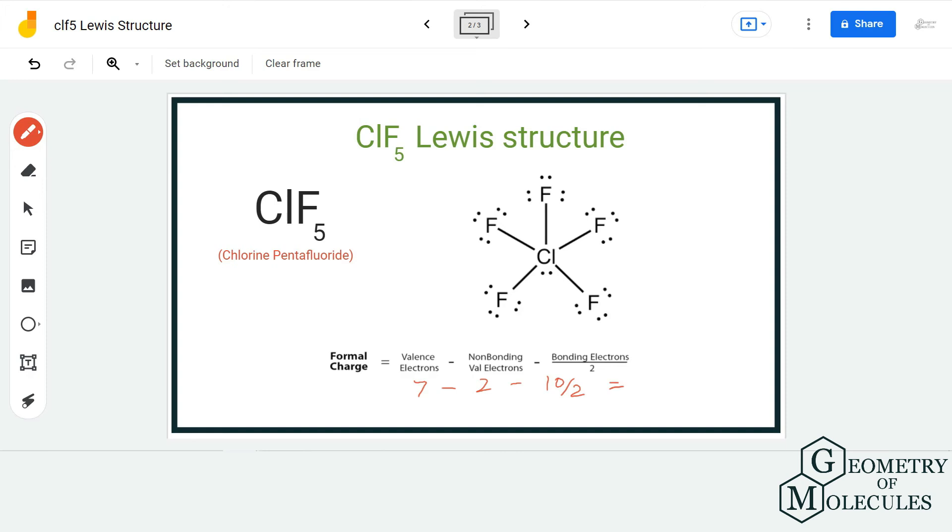For fluorine it has seven valence electrons out of which six are non-bonding and two are bonding and it has a formal charge of zero. As all the atoms in this Lewis structure have complete octets and the formal charges are zero, this is the relevant Lewis structure for ClF5.